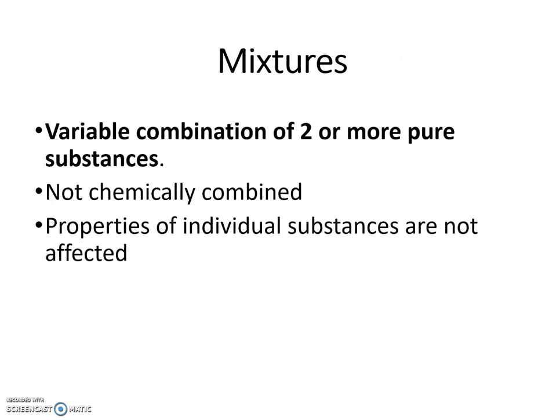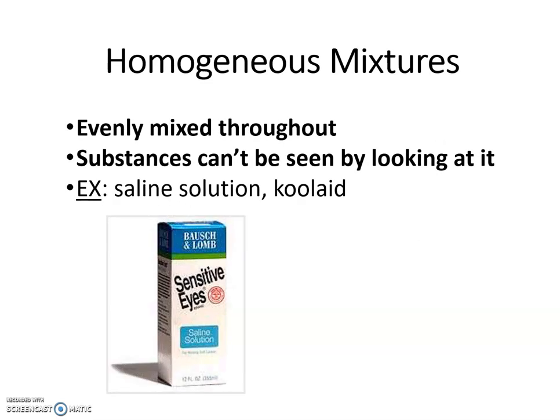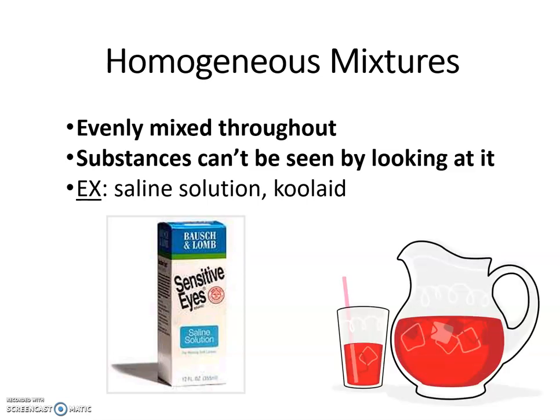So mixtures, they can vary with two or more things put together. Sometimes they can be chemically bonded, sometimes not so much. And depending on their properties, you might have a homogeneous or a heterogeneous mixture. So homogeneous is evenly mixed throughout. You can't see the difference. So for example, contact solution, even though there's some salts and there's some other things that are in there, you can't see the difference. Lemonade or Kool-Aid would also be an example of that if it's mixed thoroughly. And so those are homogeneous. Homo, same. It looks the same throughout.